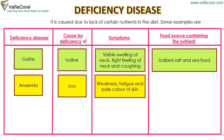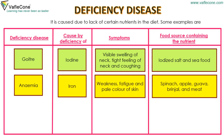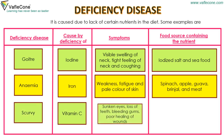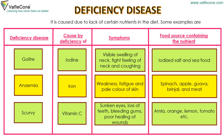Lack of iron causes anemia. Symptoms are weakness, fatigue, and pale color of skin. Food sources are spinach, apple, guava, brinjal, and meat. Lack of vitamin C causes scurvy. Symptoms are sunken eyes, loss of teeth, bleeding gums, and poor healing of wounds. Food sources are amla, orange, lemon, tomato, etc.